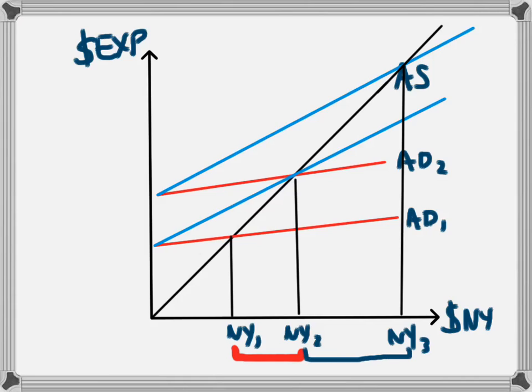We can note that from the starting points of those curves, the increase in aggregate demand is the same in both cases. So this could be, for example, an expansionary fiscal policy where the government has injected this amount of money into the economy. But the economy with a greater multiplier has a greater effect on the level of national income — and that is because they have a greater multiplier, which in turn is because they have a larger marginal propensity to consume.